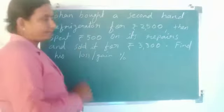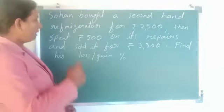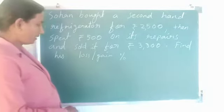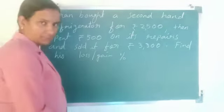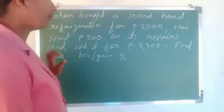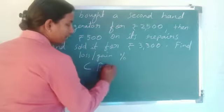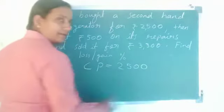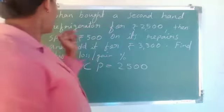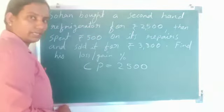Question number one: Saw bought a second-hand refrigerator for rupees 2500, then spent rupees 500 on its repairs, and sold it for rupees 3300. Find his loss or gain percentage. So here, cost price CP is equal to rupees 2500.